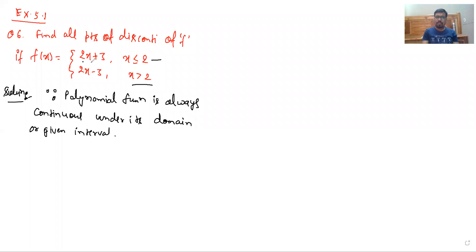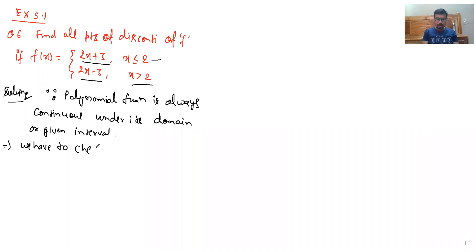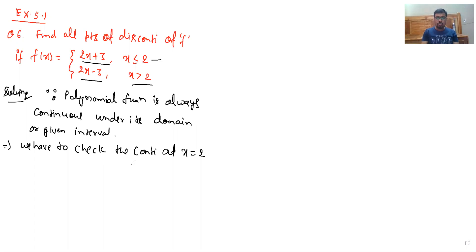For x less than or equal to 2 we have one function, and for x greater than 2 we have a different function. So we have to check the continuity at x equal to 2.